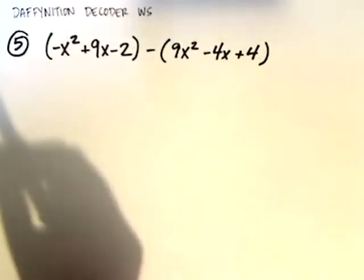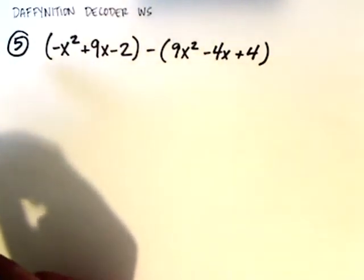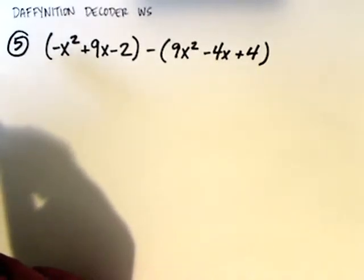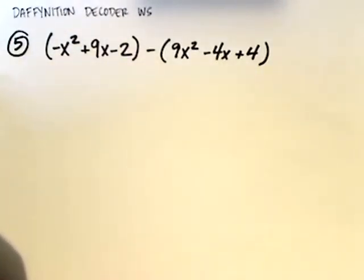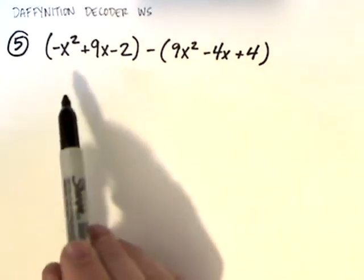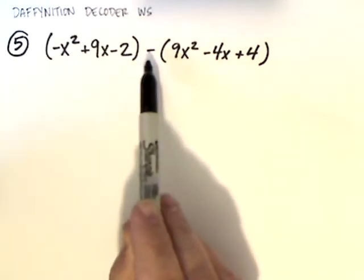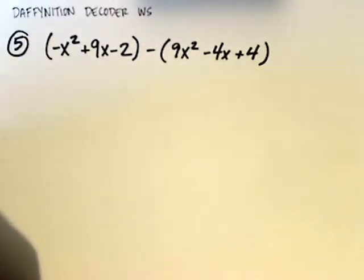Now, adding polynomials is simple. Adding polynomials is just a matter of combining like terms. You did that on the back side of this worksheet that you're working on now. You combined a bunch of polynomials using addition. But when we do subtraction, we have to do a couple things differently.